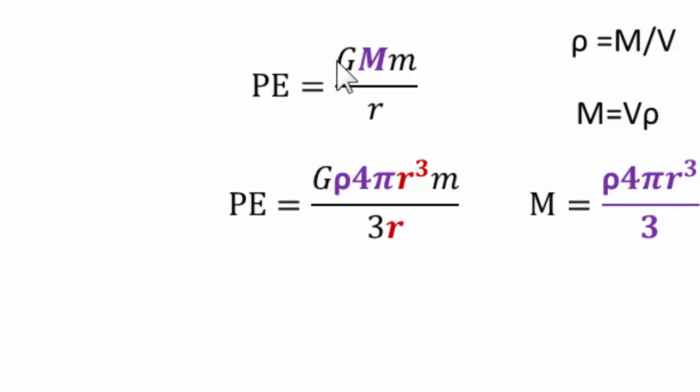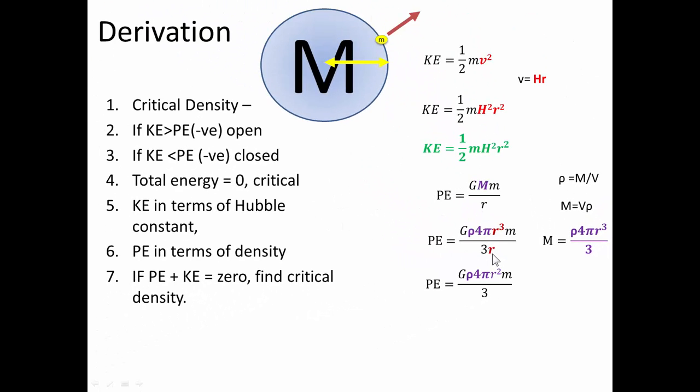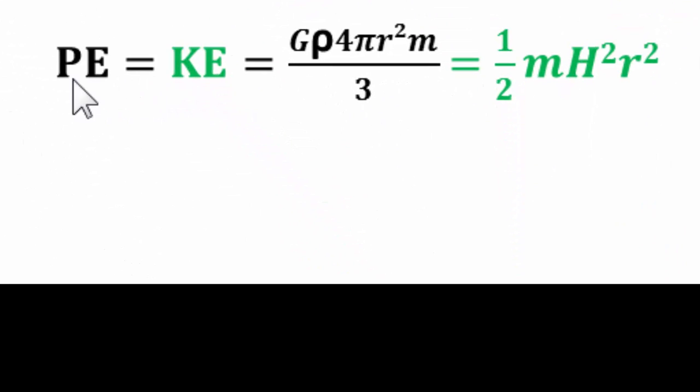So the potential energy is G, 4/3 π r cubed, m over r. And we'll tidy that up a little bit because we can cancel one of these r's. Now, if we have the critical density, the potential energy plus the kinetic energy is equal to zero. Potential energy is negative, kinetic energy is positive. So potential energy will be equal to the kinetic energy in terms of their magnitudes. And that's what we must do now. So we say the potential energy is equal to the kinetic energy.